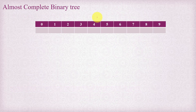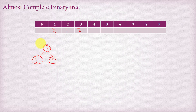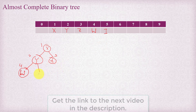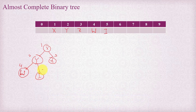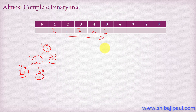If we insert elements into a one dimensional array one after another starting from index 1, we are practically inserting into an almost complete binary tree. For example, assigning x at index 1, y at index 2, z at index 3 builds the tree. Adding w at index 4 places it as the left child of y, and adding another element at index 5 places it as the right child of y. So inserting values sequentially from index 1 is equivalent to building an almost complete binary tree.